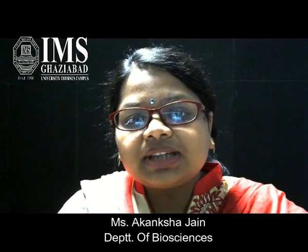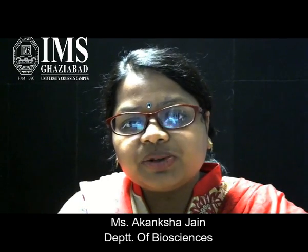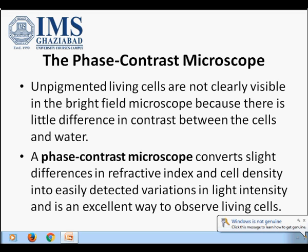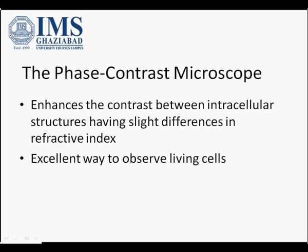Today we are going to study the basic concepts of phase contrast microscopy. Phase contrast microscope is used for studying unpigmented living cells, because in bright field microscopy there is relatively less contrast between the cell structure and the surrounding water. To create better contrast, we use phase contrast microscopy, which converts slight differences in refractive index and cell density into variation in light intensity, enhancing contrast between intracellular structures. It is an excellent way to observe living cells.